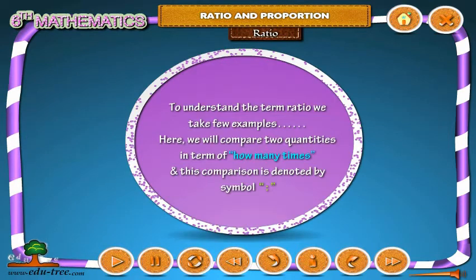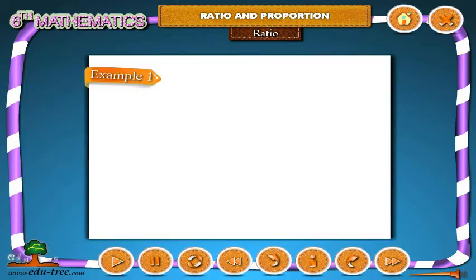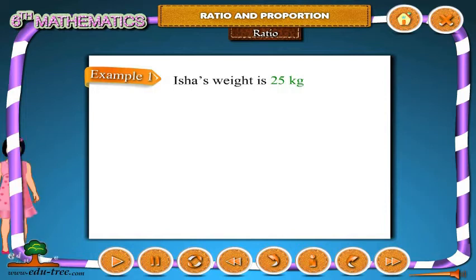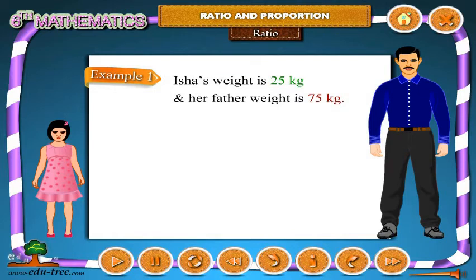To understand the term ratio, we take a few examples. Here we will compare two quantities in terms of how many times, and this comparison is denoted by the symbol ratio. Example 1: Aisha's weight is 25 kilograms and her father's